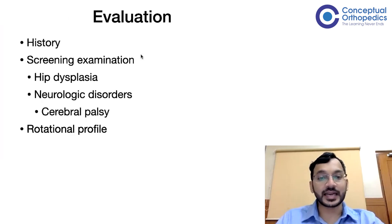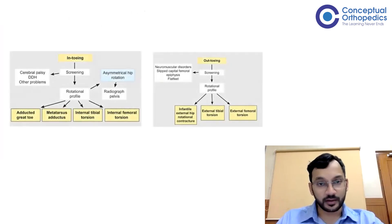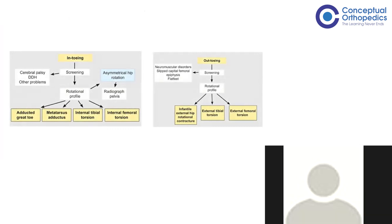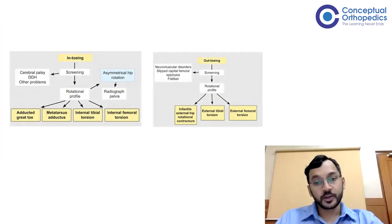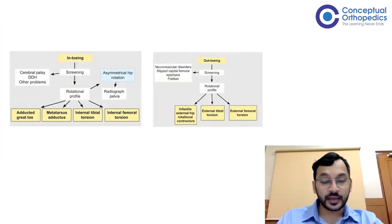Once we are done with the history and screening examination, we move on to the rotational profile. Now the rotational profile was given by Staheli, so it's commonly called Staheli's rotational profile. We need this because we need to differentiate the different types of gaits and what particular condition we are looking at. If we have the rotational profile in our heads, we can easily rule out or find out which of these conditions are causing the particular in-toeing or out-toeing.